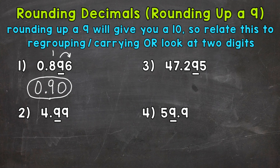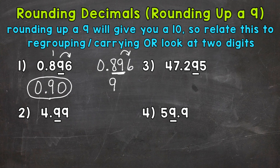Another way we can think through this — let me rewrite our decimal. We're going to round to the hundredths. We know we're going to round up. Let's look at these two digits here — the 89. Think of this like an 89. If we round up 89, that gives us 90. So let's put our 90 here, put our decimal in and our 0 to show that we don't have any whole numbers. And we get 90 hundredths that way as well.